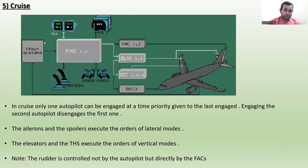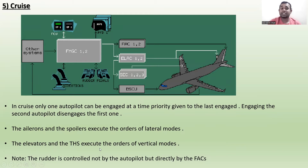In cruise, only one autopilot can be engaged at a time. Priority is given to the last engaged, and engaging the second autopilot disengages the first. The ailerons and spoilers execute the orders of the lateral modes, and the elevators and the THS execute the orders of the vertical modes. Note that the rudder is controlled not by the autopilot but directly by the Flight Augmentation Computer.